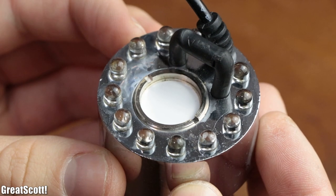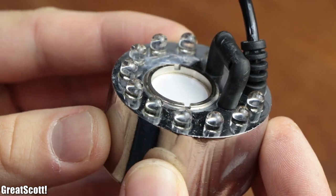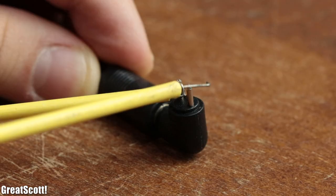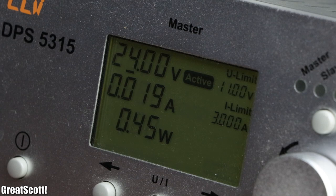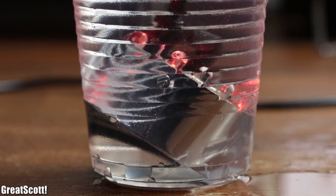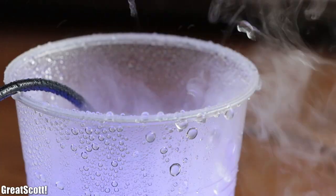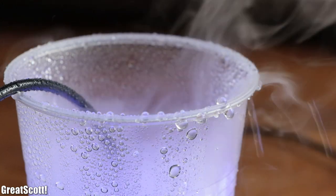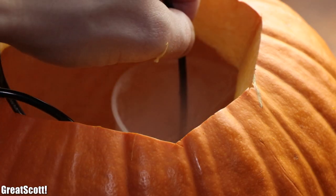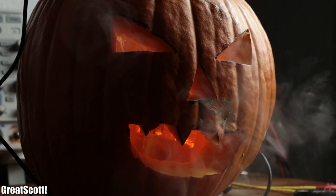That is why I got myself this so-called ultrasonic mist maker which after powering it with 24 volts and placing it inside a container with water does create some intriguing looking mist. And by adding this effect to my pumpkin, it looks a lot more spooky.